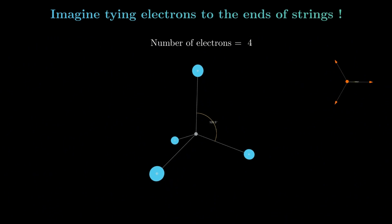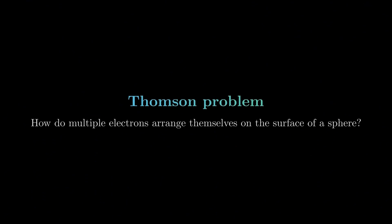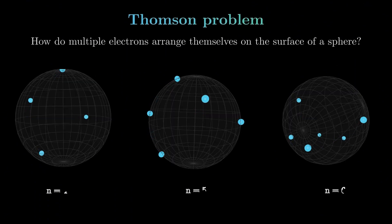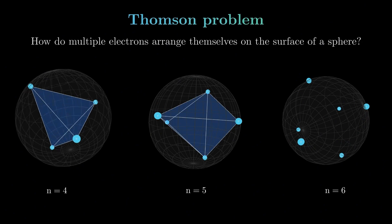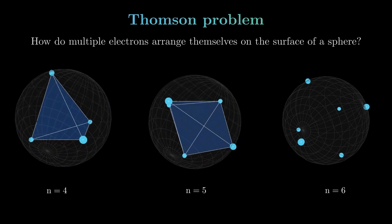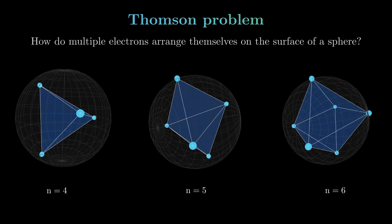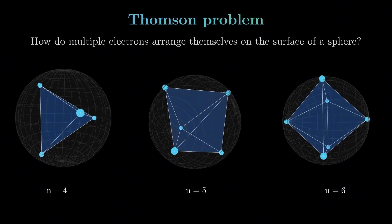This simple game with strings is actually very similar to a well-known classic problem in physics called Thompson's problem. Instead of tying charges with strings, Thompson's problem asks how multiple electrons arrange themselves on the surface of a sphere. The answer: they spread out as symmetrically as possible to minimize the electrostatic potential energy, often aligning with the vertices of Platonic solids. For example, with four charges they form a tetrahedron; with five, a triangular dipyramid; which seeks a regular octahedron, and so on.